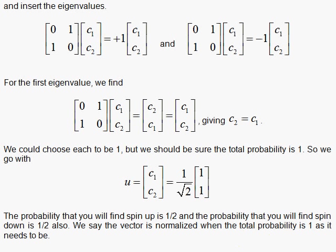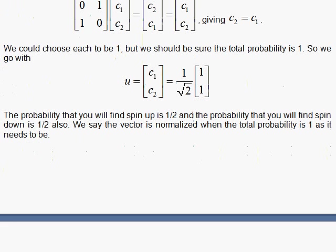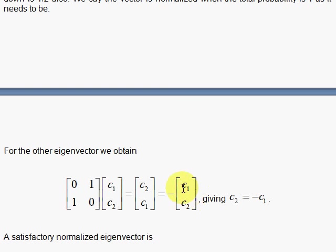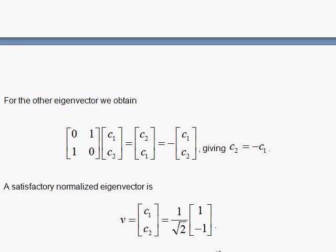If I look for my negative eigenvalue solution, I do the same thing. 0 times C1 plus 1 times C2 is C2 again. And 1 times C1 plus 0 times C2 is C1 again. But now that has to equal minus the same thing back, C1, C2. So I find that the coefficients must be negative of each other. So I immediately get the solution 1 minus 1 with the normalization factor 1 over square root of 2. So once again, the probability that spin up is 1 half and down is 1 half.